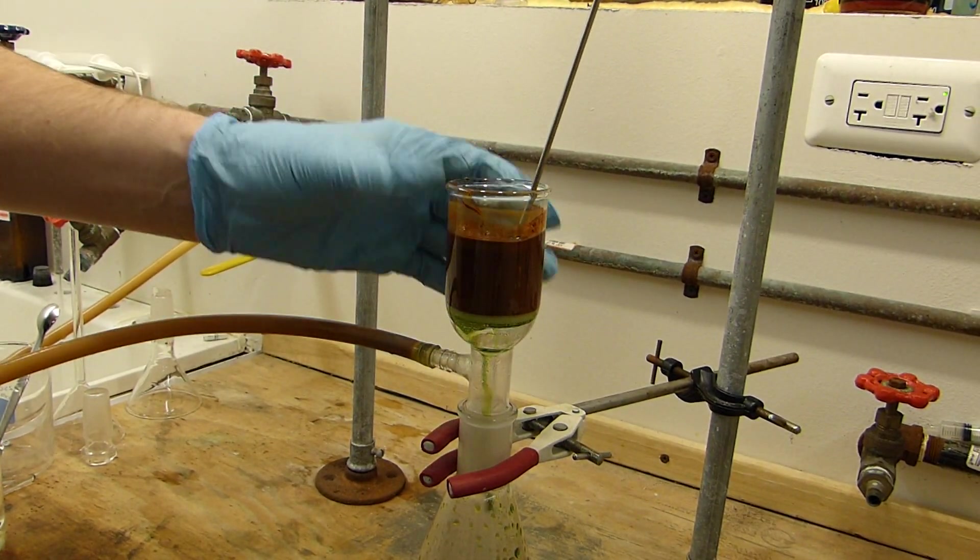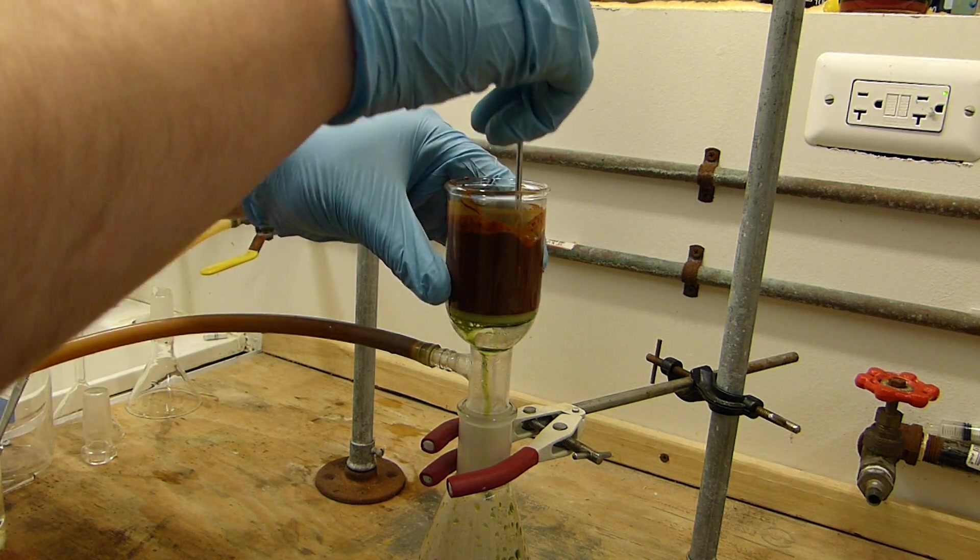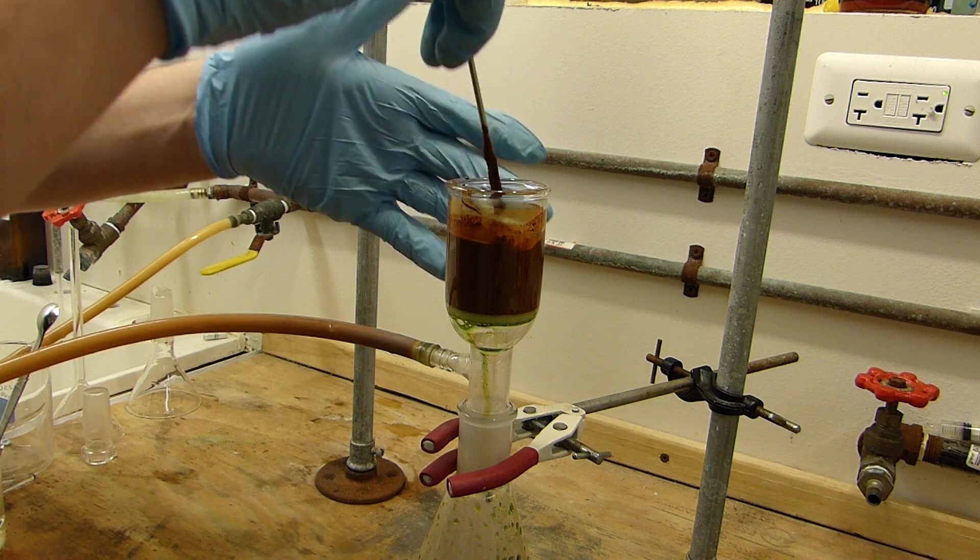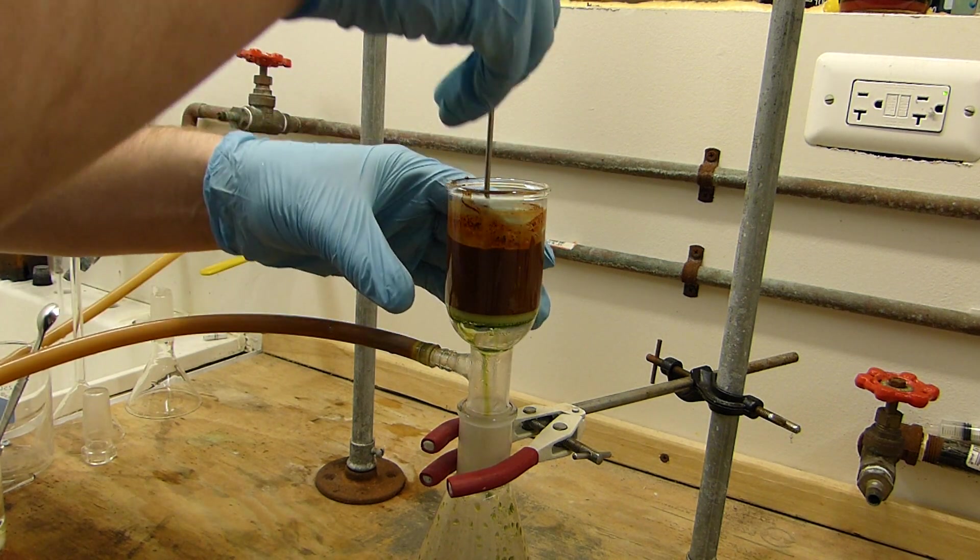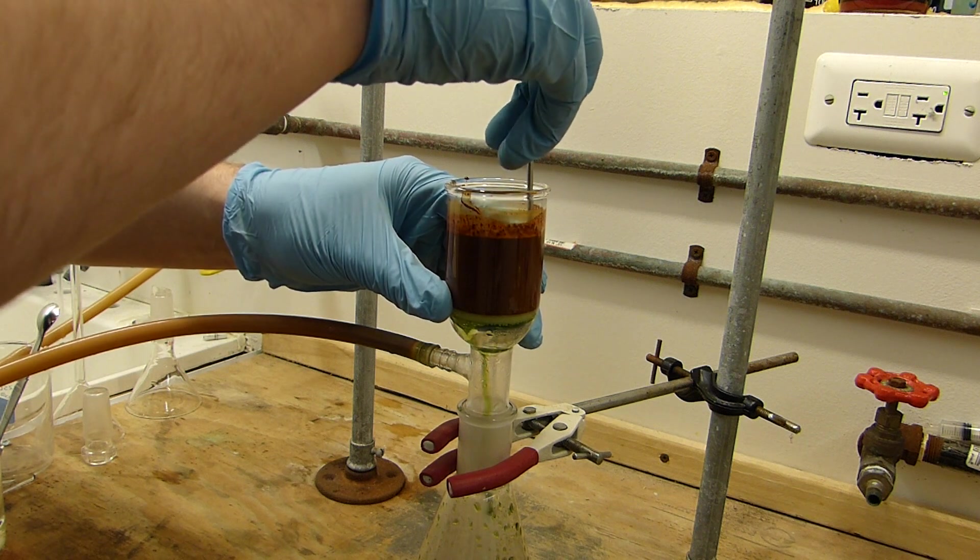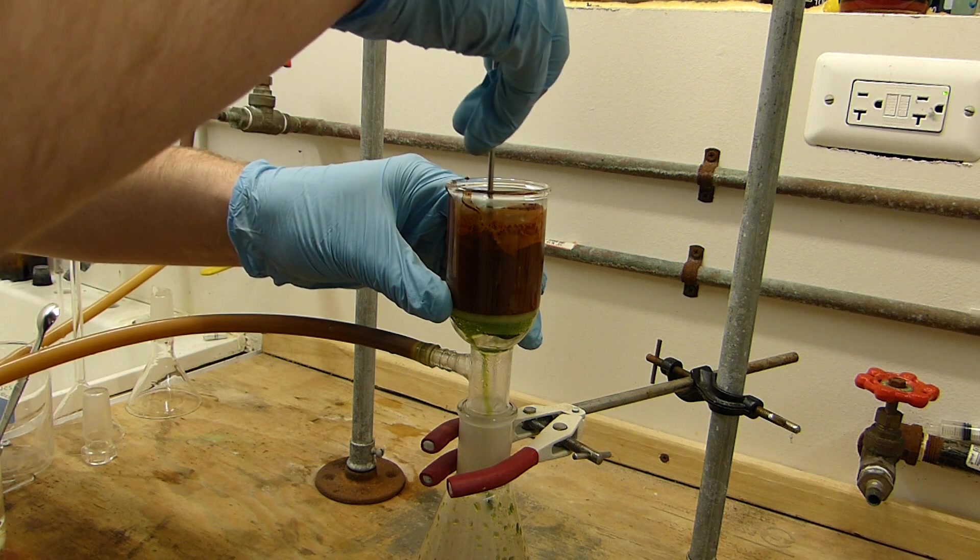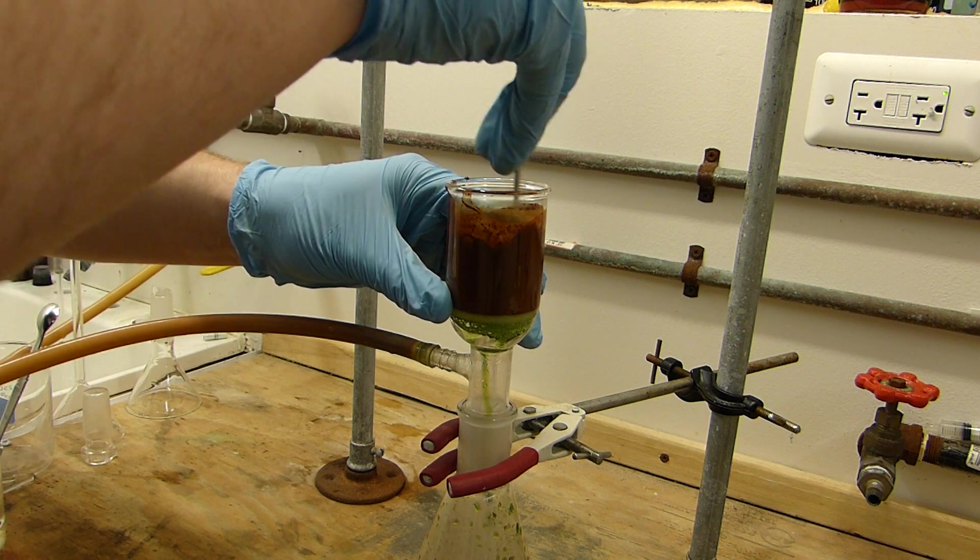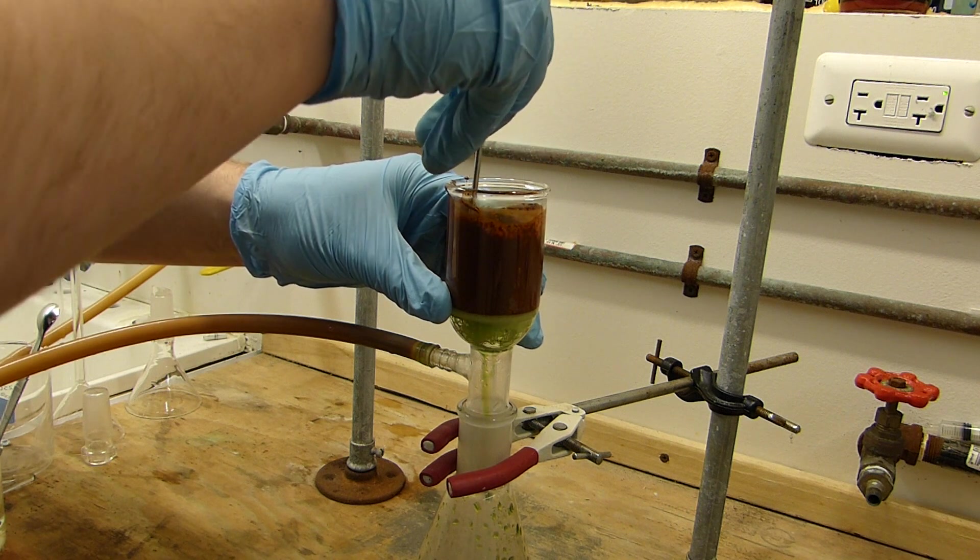So this stuff is proving quite difficult to filter. It's because it's such a fine precipitate. It's forming this mud in here. If you have a difficult vacuum filtration like this, you can always try very carefully so not to damage the frit to scrape the hardened precipitate off the frit, and allow fresh solution to touch the frit. And you can usually get it to start back up again.